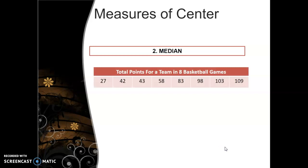Okay, I have to do another example of median because not all data sets have an odd number of data values. So they don't all have a middle. So if we're looking at the total points for a team in eight basketball games, they're already listed in order here, 27, 42, 43, 58, 83, 98, 103, and 109. But there's no one value in the middle. So to find the median, we take the two values in the middle, 58 and 83, and we find the mean of those two values. So add them together, divide by 2, and we'll get 70.5 for the median.